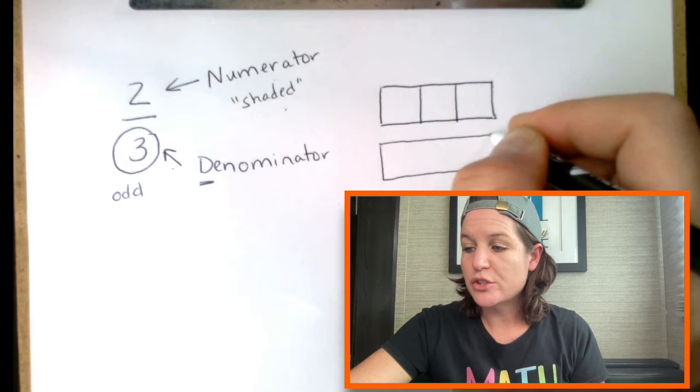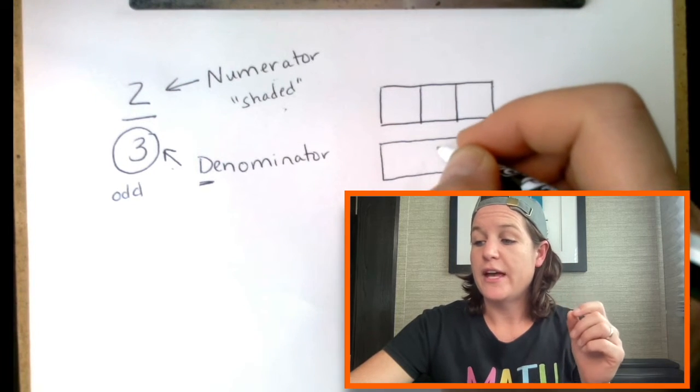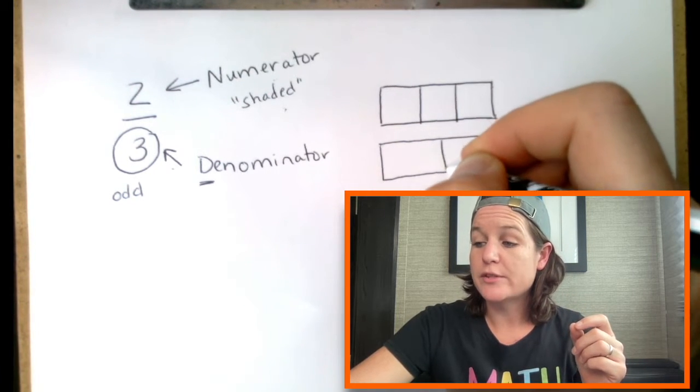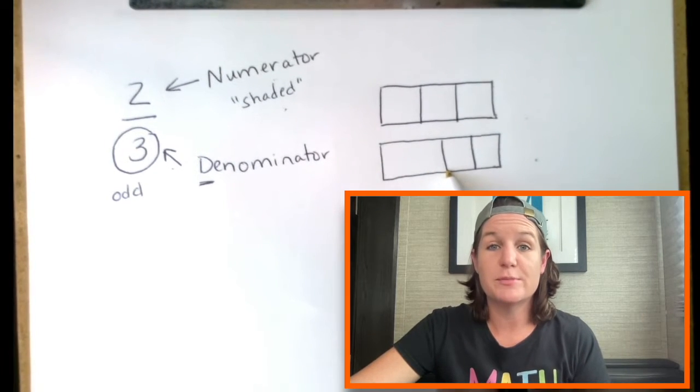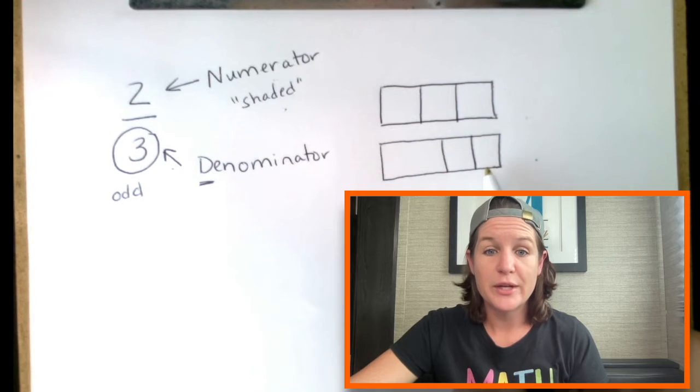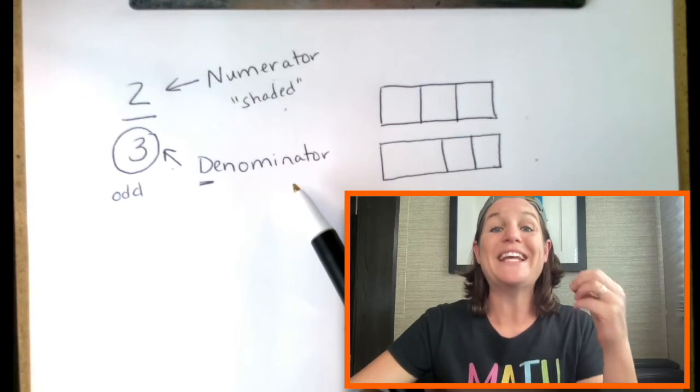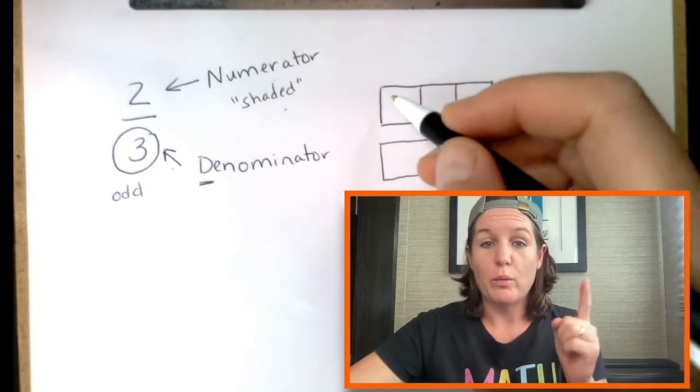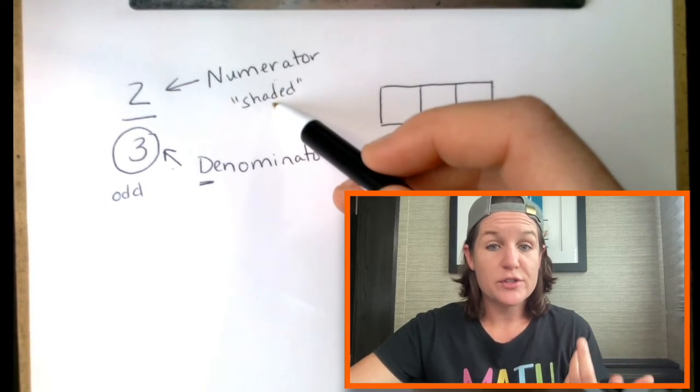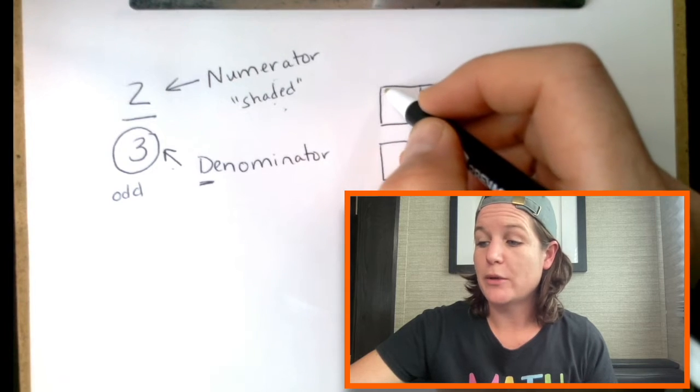Now, you really want to make sure that when students and when you are modeling that you're making them look as equal as possible. For instance, this is definitely not equal. Look how much longer this chunk is compared to the other two. It's the total number of equal parts. Make them look as equal as possible. And then what are we, our numerator is two.